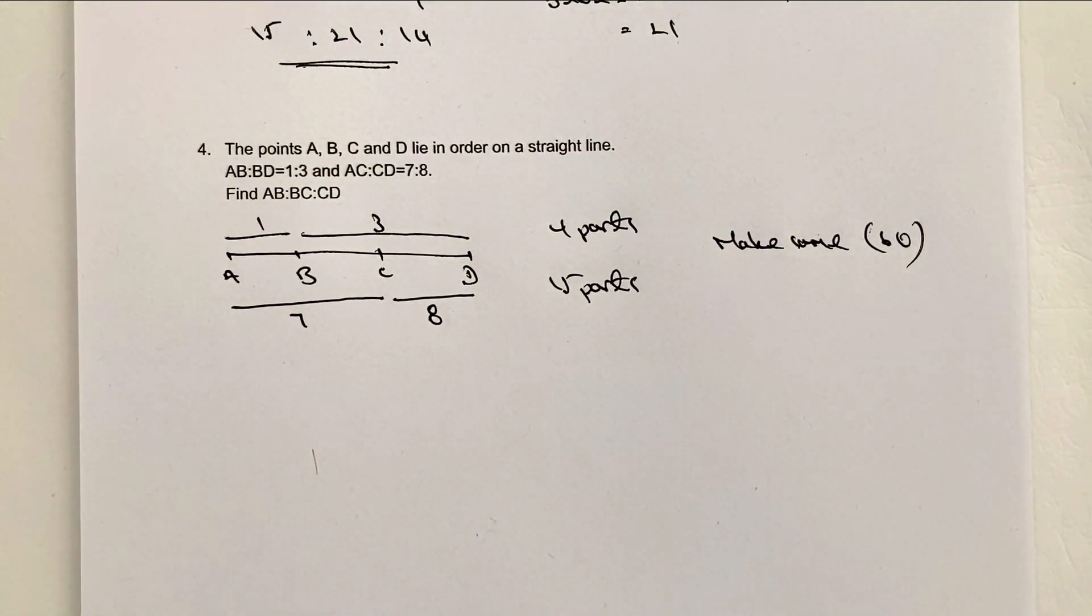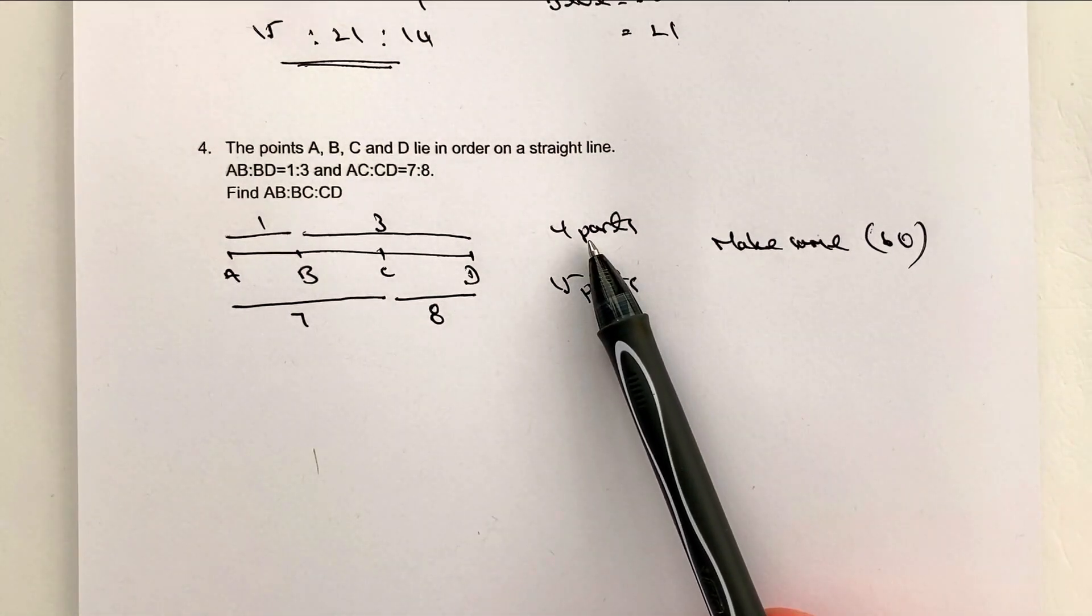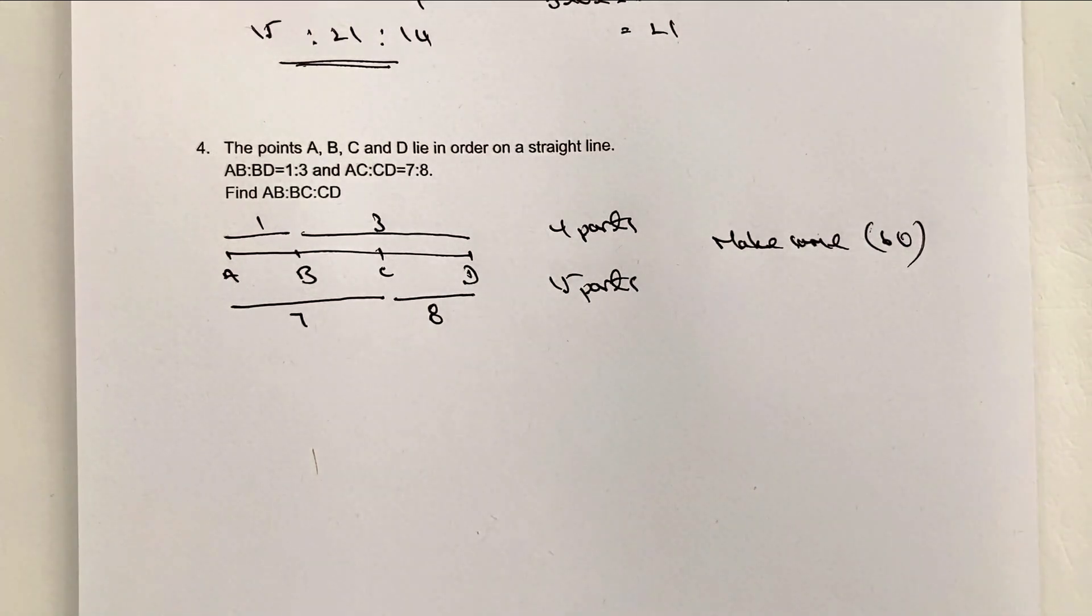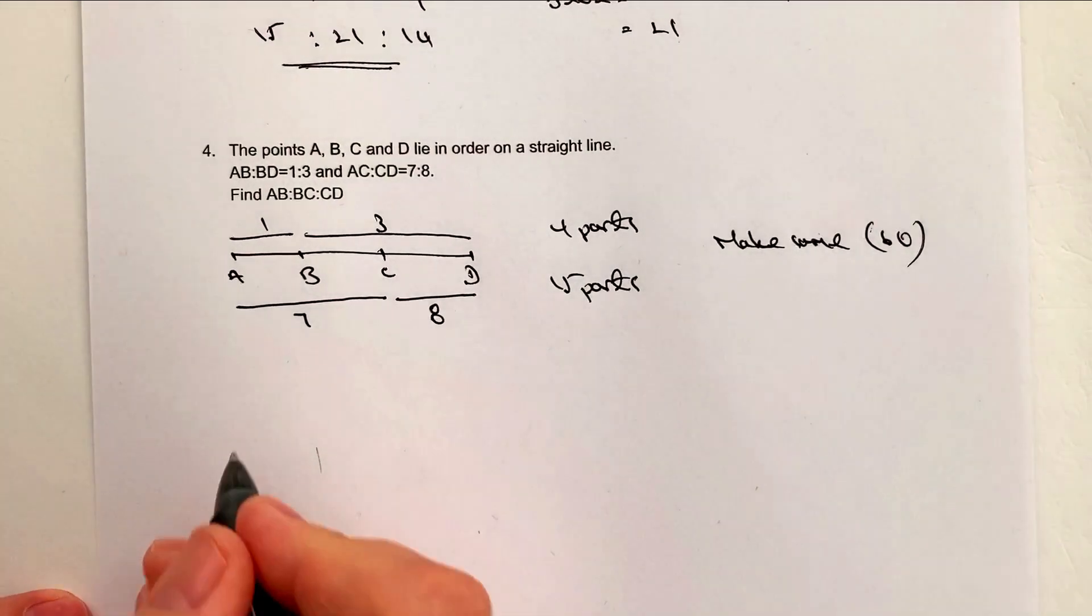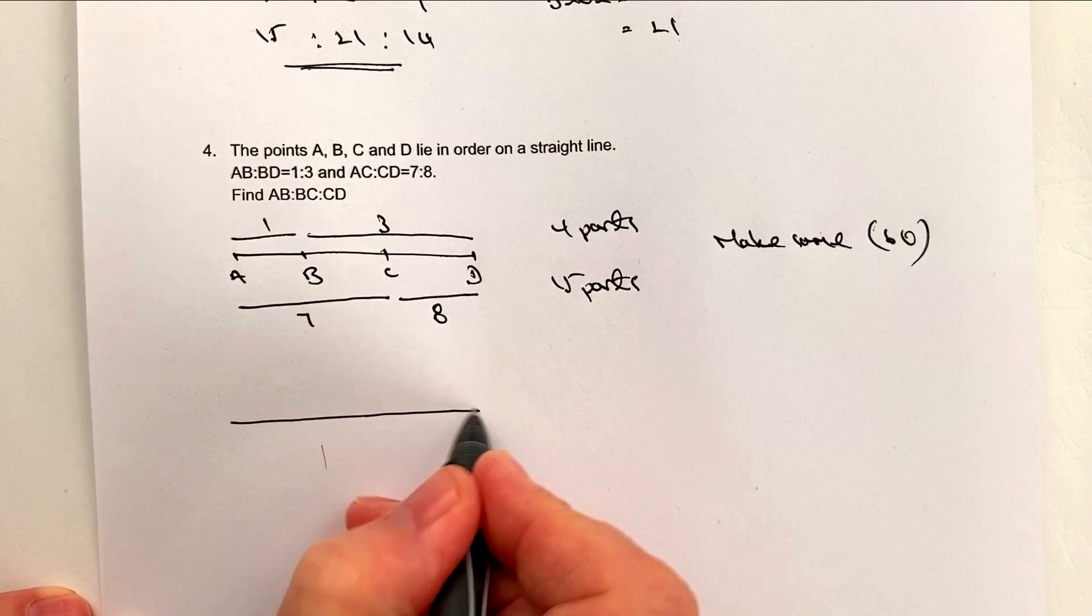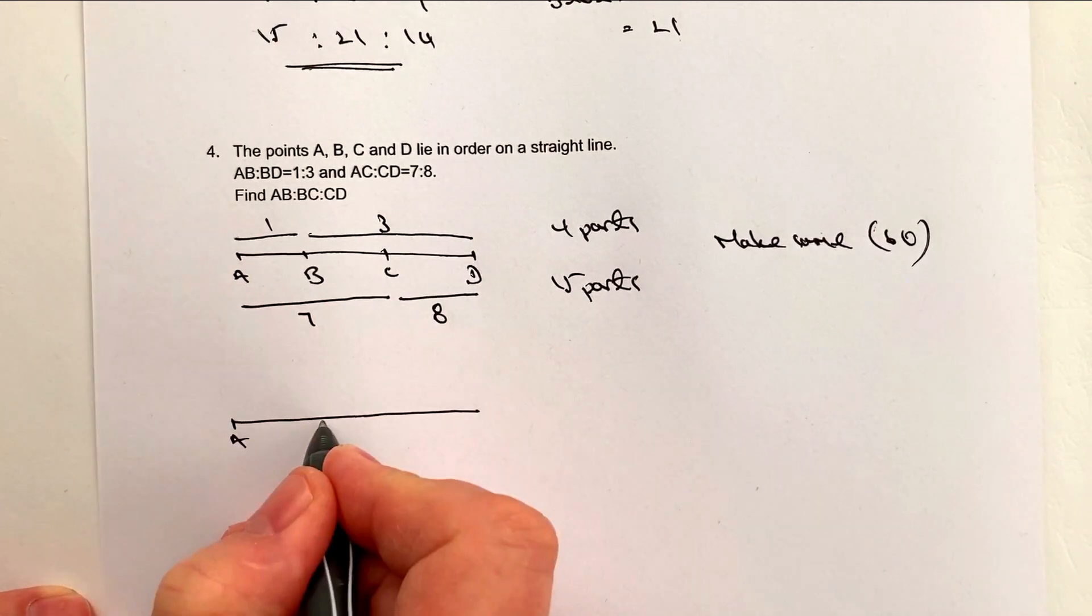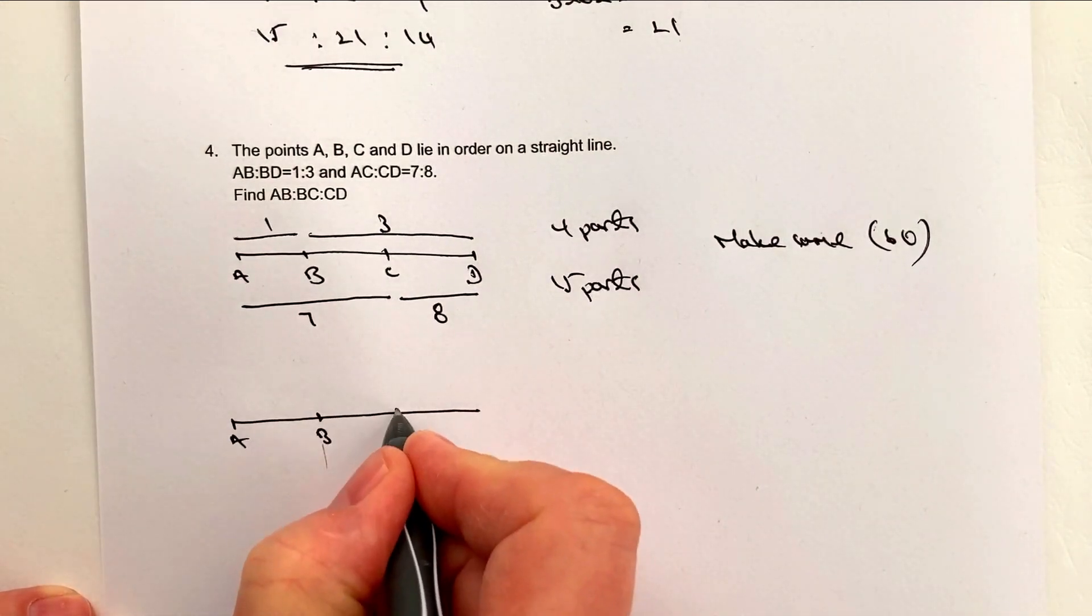So we're going to make them the same and we're going to use 60. That just seems like a reasonably easy way of doing it because then I can multiply this by 15 and I can multiply this by 4. So what I'll end up with is exactly the same line with A, B, C, and D.